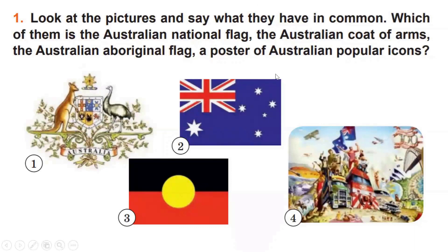Right now I'm asking you to have a look at the pictures and say what these pictures have in common. Which of them is the Australian national flag, the Australian coat of arms, the Australian Aboriginal flag, and a poster of Australian popular icons?